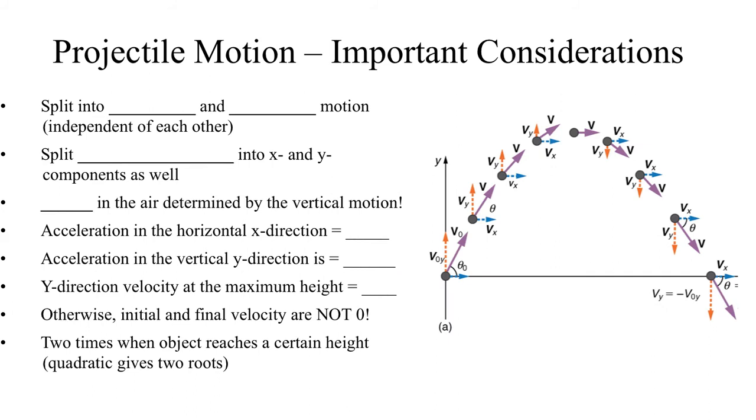When we think about solving projectile motion problems, it's important to keep a few things in mind. The first is that we can't deal with things traveling in two dimensions at the same time, but we are very familiar with how to deal with things moving horizontally and things moving vertically. So what we can do is we can split our projectile motion problems into horizontal and vertical motion. And we know that these forms of motion are independent of each other. We proved that in our lab.